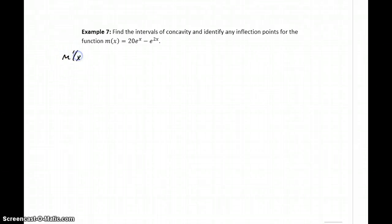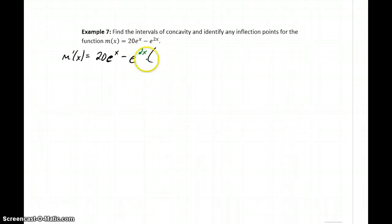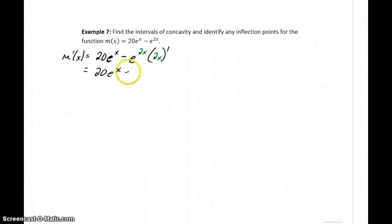In example 7, we'll start again by finding the first derivative. In this case we have a composite function, so it will be the derivative of e to the 2x, which is e to the 2x, times the derivative of that interior function. This gives us 20e to the x minus the derivative of 2x, which is 2e to the 2x.